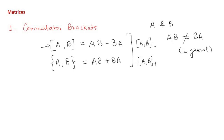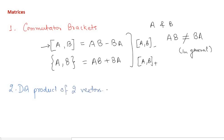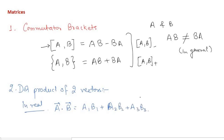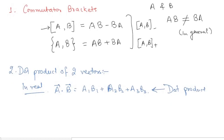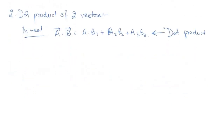I discussed commutator brackets in the previous lecture and have just concluded it here. Now today I want to start with the dot product of two vectors. In real vectors, the dot product of two vectors is given by their components: a₁b₁ + a₂b₂ + a₃b₃, where the aᵢ's and bᵢ's are the components of the vectors.